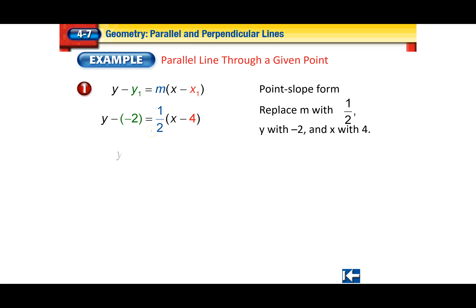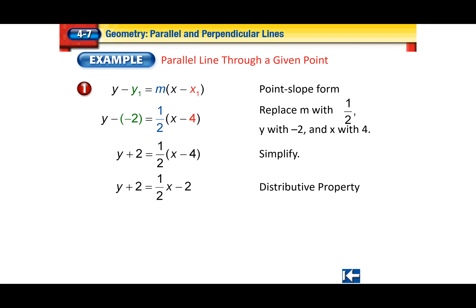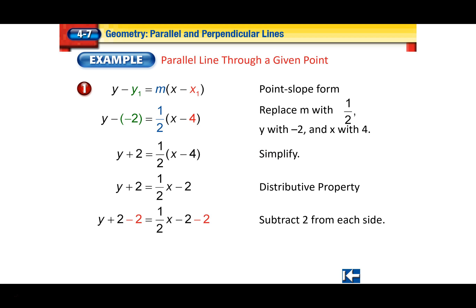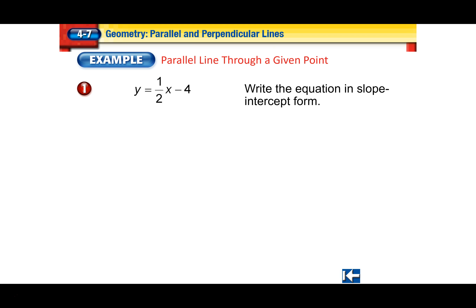Make sure you don't switch the x and y values by accident. Then simplify — handle the double negative. Then distribute. Don't freak out about multiplying a fraction: one-half times negative 4 is technically negative 4 over 1, which gives 4 over 2 negative, coming out to negative 2. Then subtract 2 from both sides to get y by itself, and now we're in slope-intercept form.